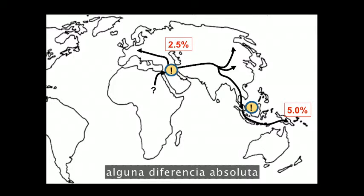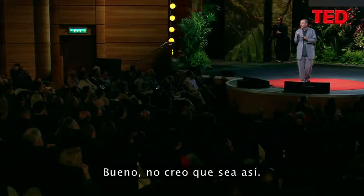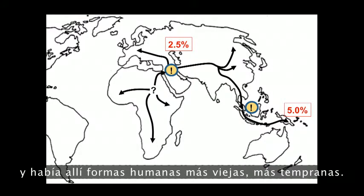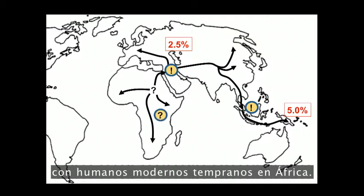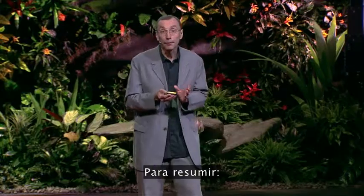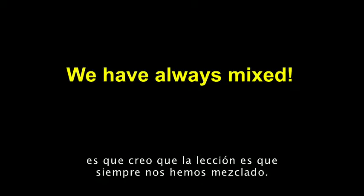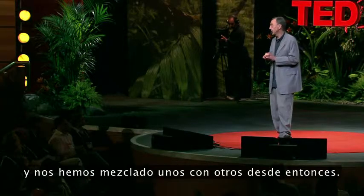Does this mean there is, after all, some absolute difference between people outside Africa and inside Africa, in that people outside Africa have this old component in their genome from extinct forms of humans, whereas Africans do not? Well, I don't think that is the case. Presumably modern humans emerged somewhere in Africa, spread across Africa, and there were older, earlier forms of humans there. Since we mixed elsewhere, I'm pretty sure that one day, when we have a genome of these earlier forms in Africa, we will find that they also mixed with early modern humans in Africa. To sum up: what have we learned from studying genomes of present-day humans and extinct humans? I think the lesson is that we are always mixed — mixed with these earlier forms of humans wherever we met them, and mixed with each other ever since.